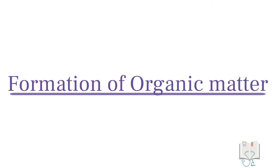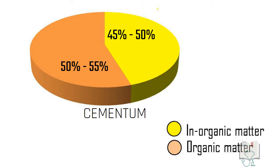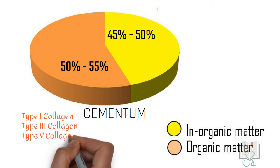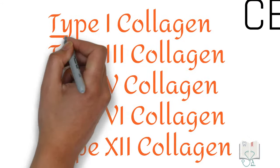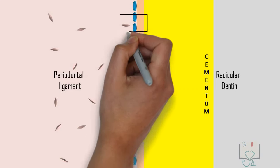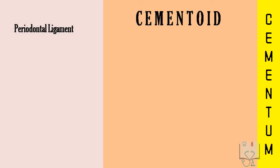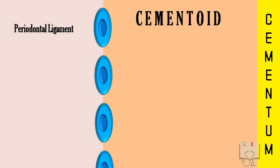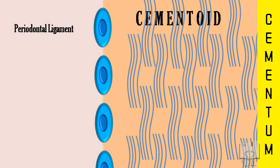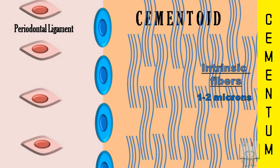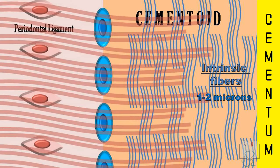Formation of organic matter: the organic matter of cementum is mainly formed of collagen fibers, the majority of which are type 1 collagen. These type 1 collagen fibers are formed from two sources. The first source is cementoblasts of cementum, which secrete collagen fibers parallel to the surface of cementum called intrinsic fibers — they are 1 to 2 microns wide. The second source are fibroblasts of the periodontal ligament, which form collagen fibers perpendicular to the cementum surface called extrinsic fibers — they are 5 to 7 microns wide.